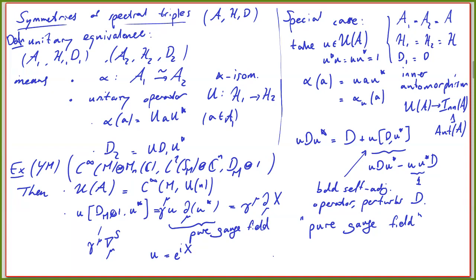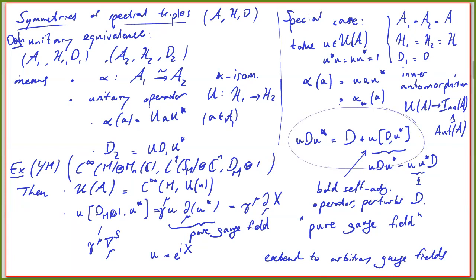Now let's try to go to arbitrary gauge fields. What we're after is to extend this formula to allow arbitrary perturbations or gauge fields. The symmetries of spectral triples considered so far could be these unitary ones, but let's look at another type of symmetry on the level of algebras.